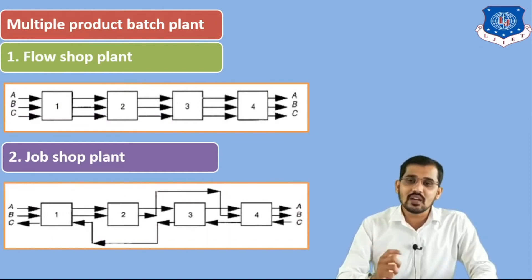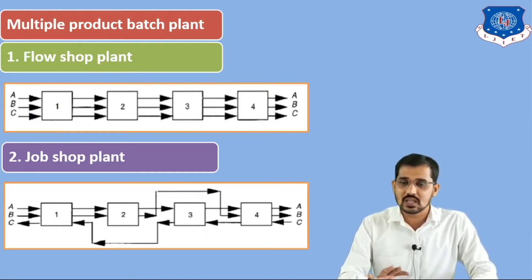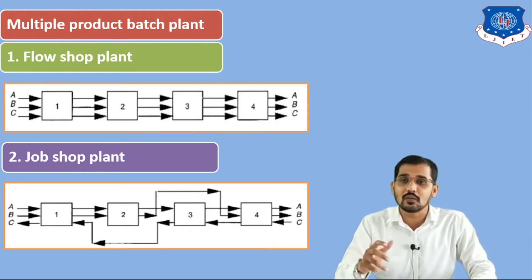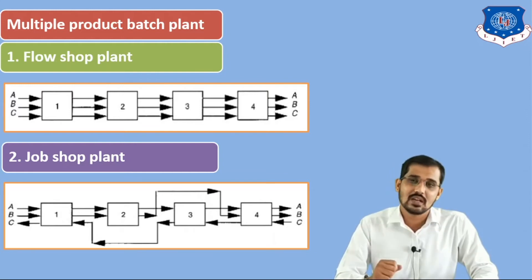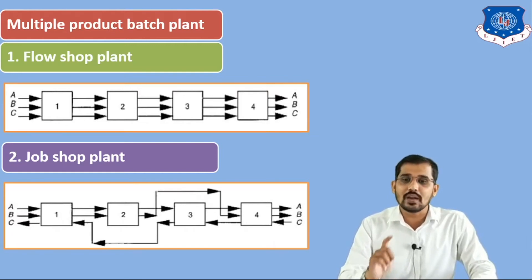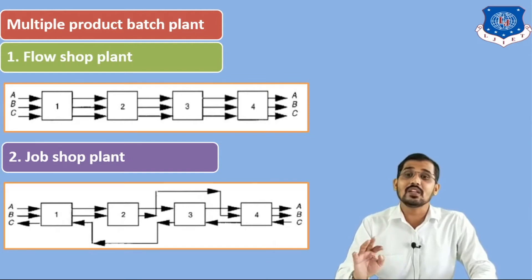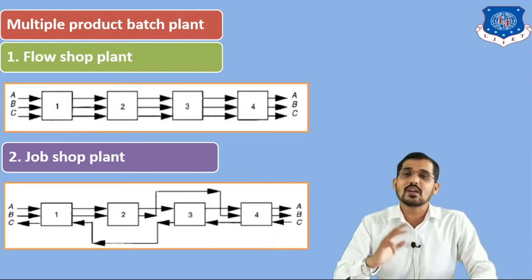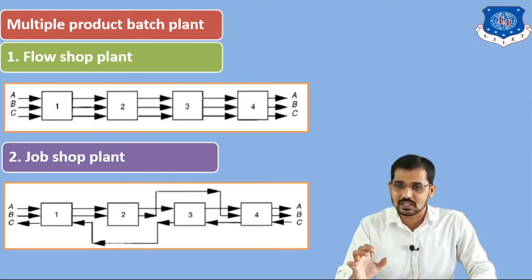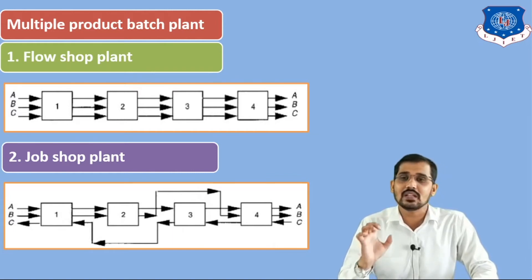Now we will see the diagram for the job shop plant. You can see on the screen: this is the figure for the job shop plant. Here we have 4 stages and 3 products, but all 3 products are not similar in nature — this is a multi-purpose plant. These products require different numbers of stages and different sequences. Product A requires 4 stages, product B requires only 3 stages, and product C has different sequences. This is the definition of the job shop plant, where different numbers of stages and different sequences are required — that is why it is known as the multi-purpose plant. The flow shop plant requires the same number of stages, has similar products and similar sequences — that is why it is known as the multi-product plant.